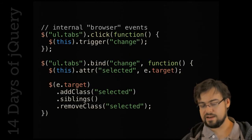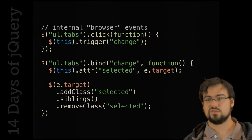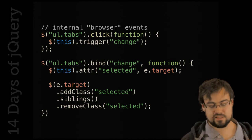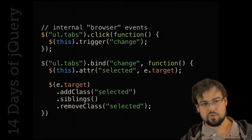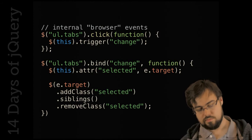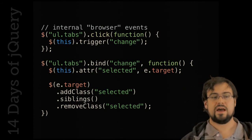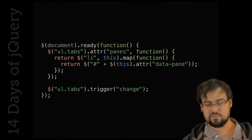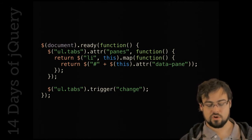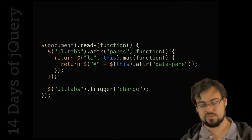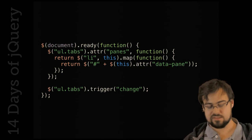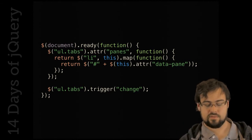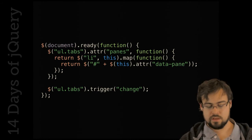We still have to implement the browser code. The nice thing is it's very familiar — you know how to do $('ul.tabs').click(), bind to 'change,' add classes, get siblings, remove classes. On document ready, we assign a 'panes' attribute to the tabs element by mapping over all the LIs, getting the pane from data-pane, and storing the result. Then we trigger 'change' to initialize the correct tab.